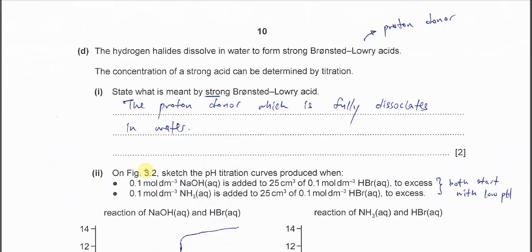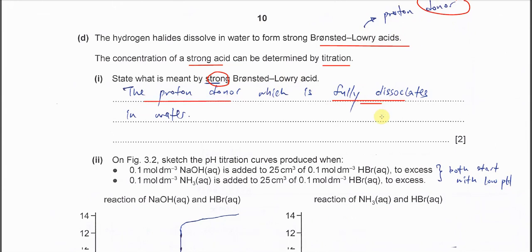Part D. Hydrogen halides dissolve in water to form strong Bronsted-Lowry acids. The concentration of strong acid can be determined by titration. State what is meant by strong Bronsted-Lowry acid. Define the Bronsted-Lowry acid first - it's a proton donor. This proton donor must be fully ionized or dissociated in water. That's what you need to mention.